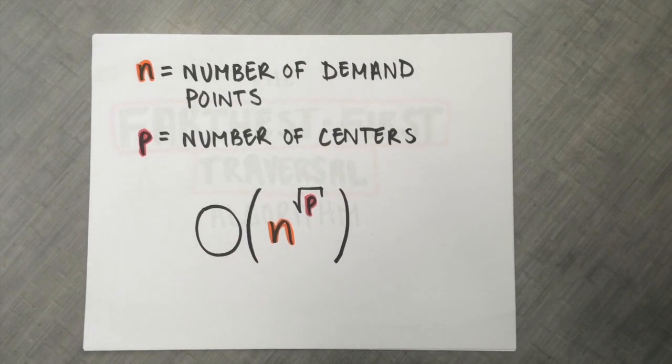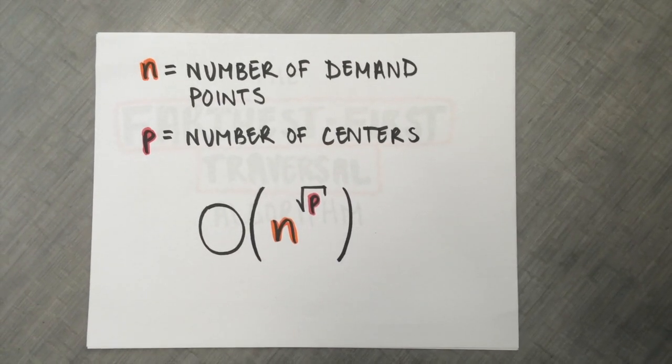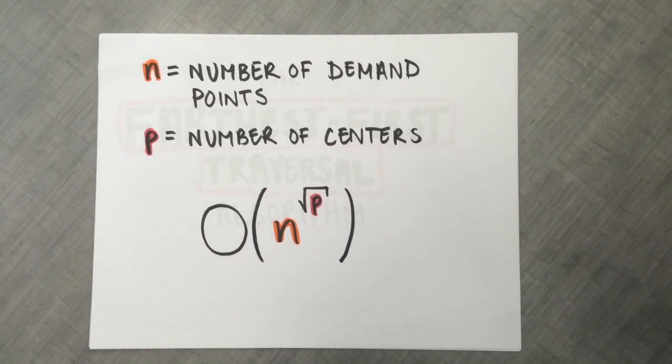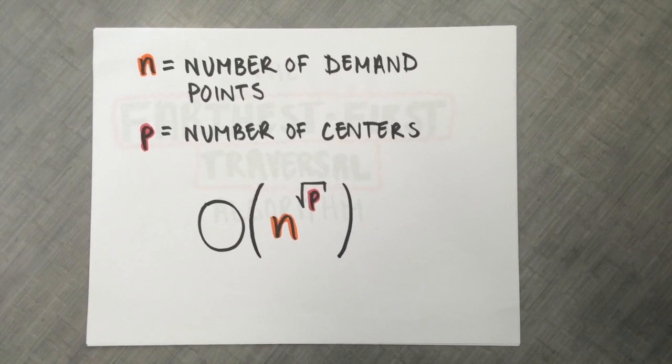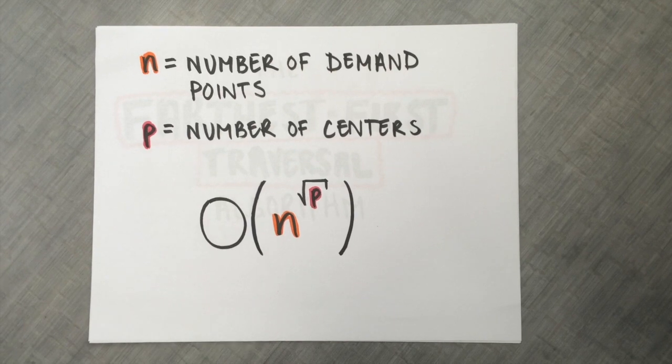There exist algorithms to produce exact solutions to this problem. One exact solver runs in time O(n^√p). This is a sub-exponential running time.